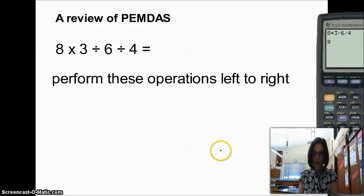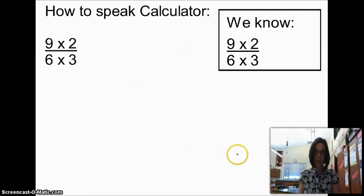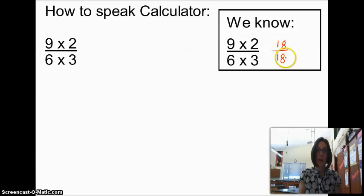The reason we review that is because we're going to do some calculations like this. We know by looking at this that 9 times 2 is 18, and 6 times 3 is 18, and anything divided by itself is just 1. So we know the value of this expression is 1.